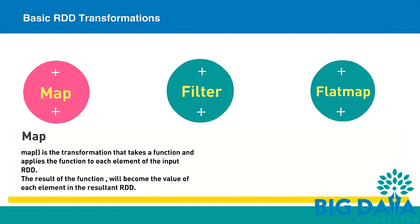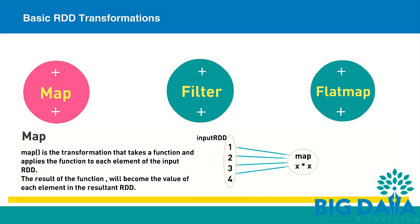Map is a transformation that takes a function and applies the function to each element of the input RDD. The result of the function will become the value of each element in the resultant RDD. If input RDD contains values 1 to 4, then map transformation to square the values will return 1, 4, 9, 16 as the resultant RDD. The square function is applied to each element of the input RDD.